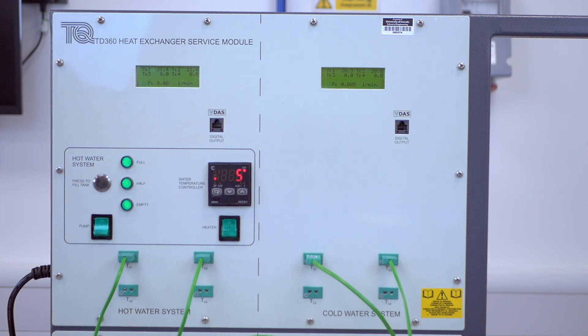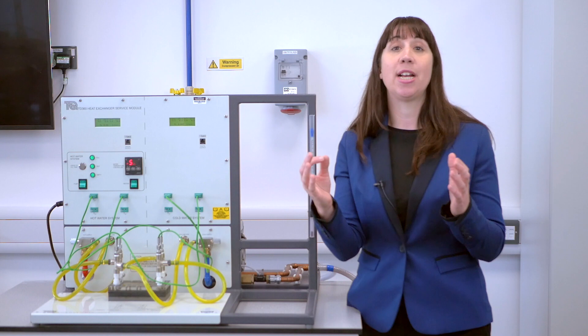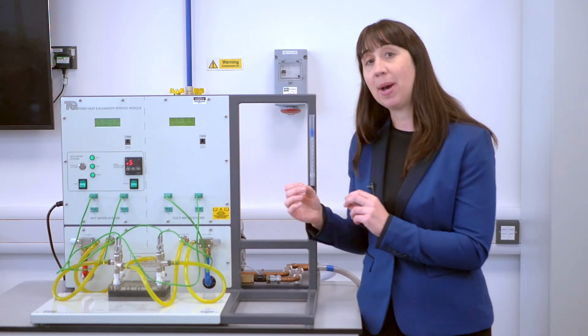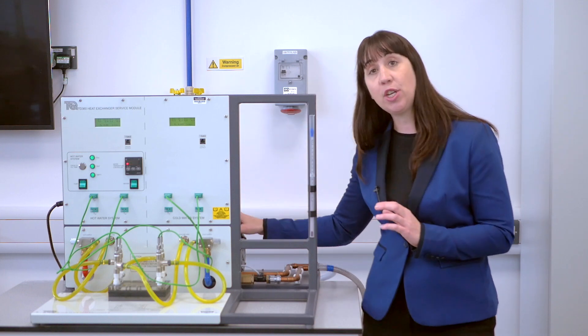The water is circulated through a closed loop from the tank, through a needle valve, through the heat exchanger and back to the tank by a pump found at the back of the unit.